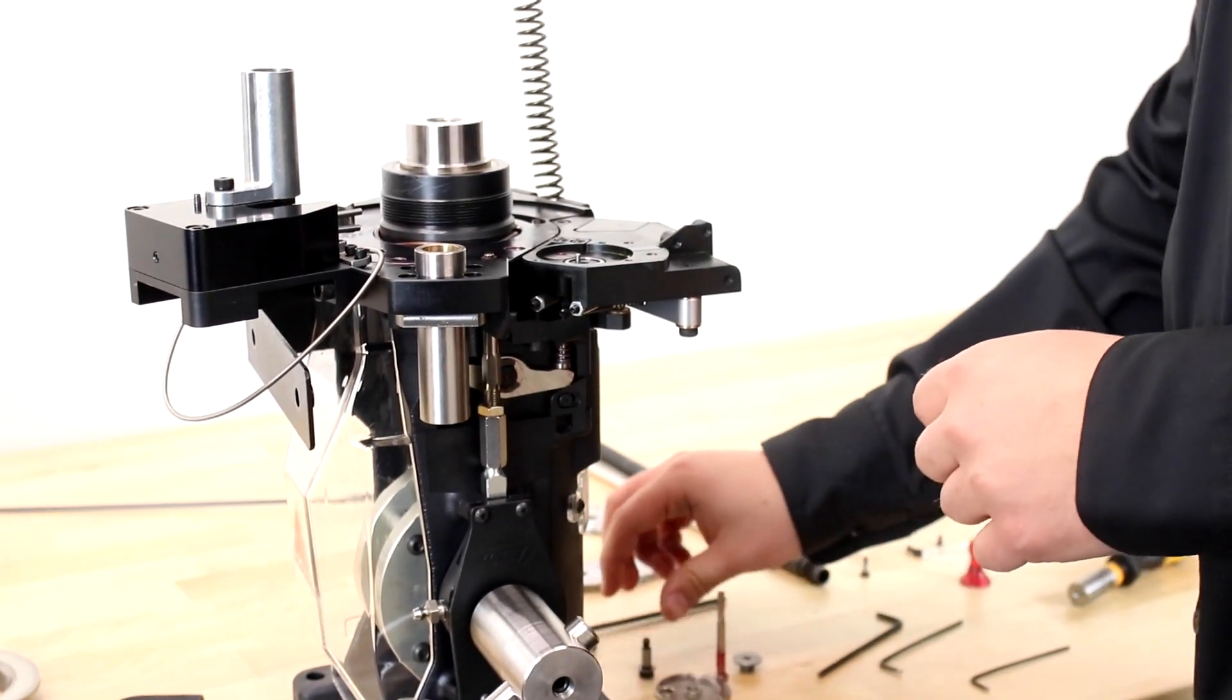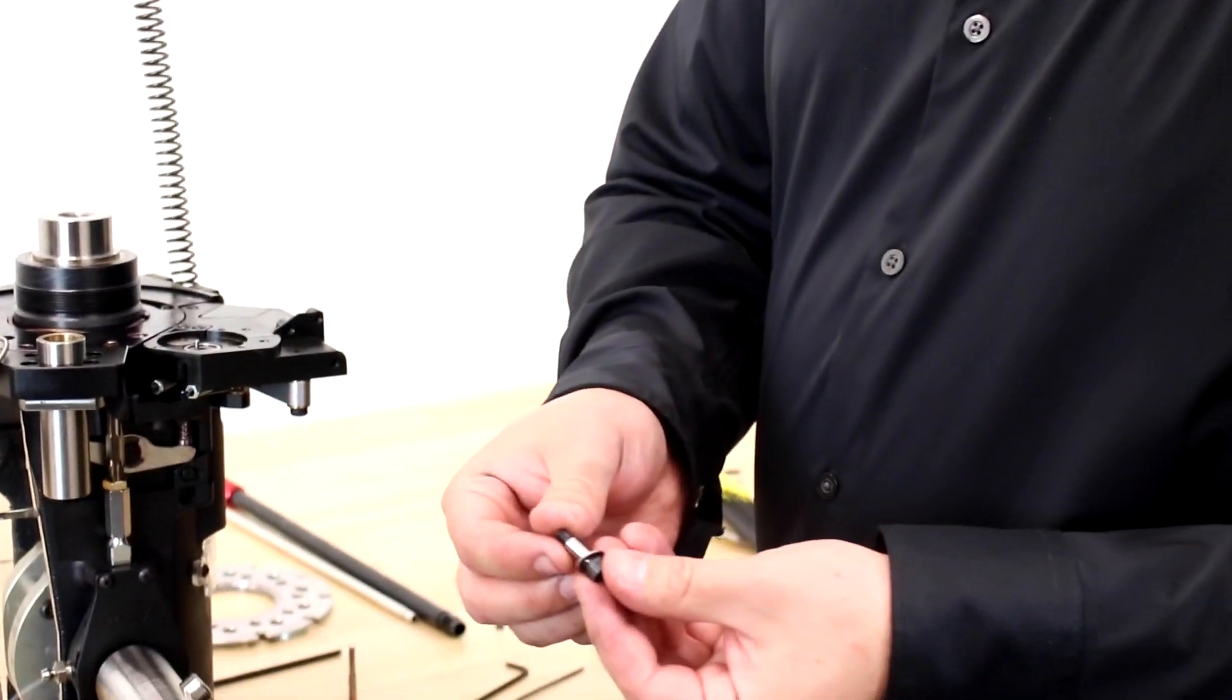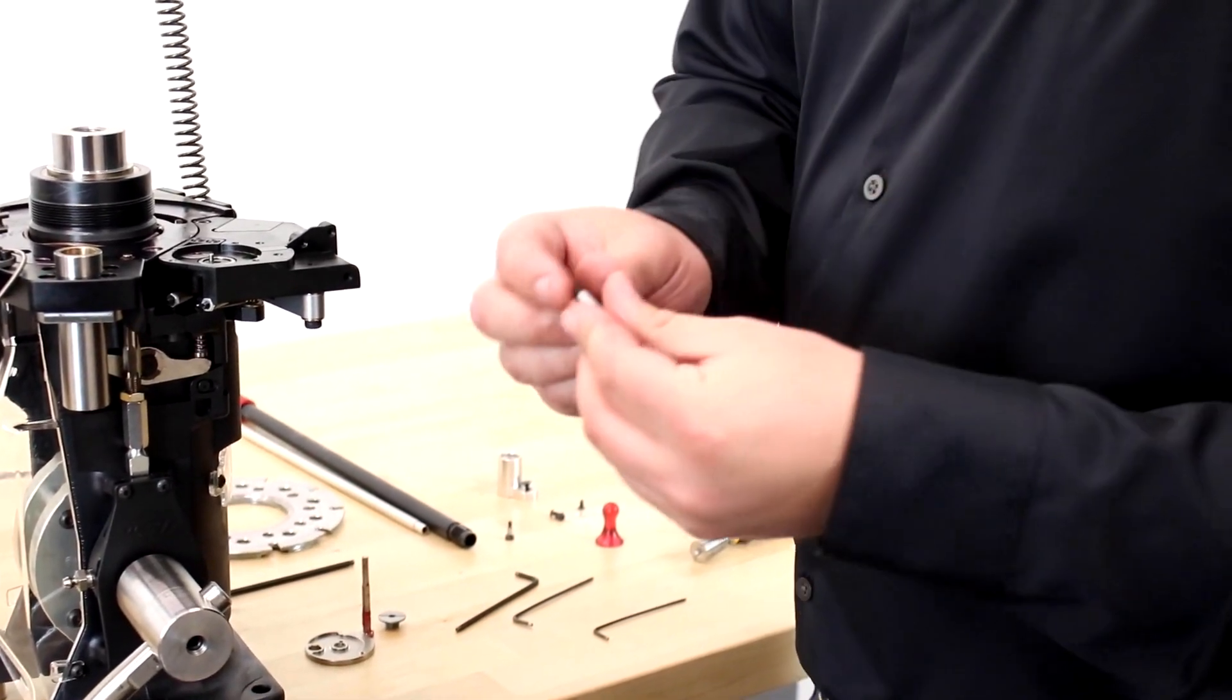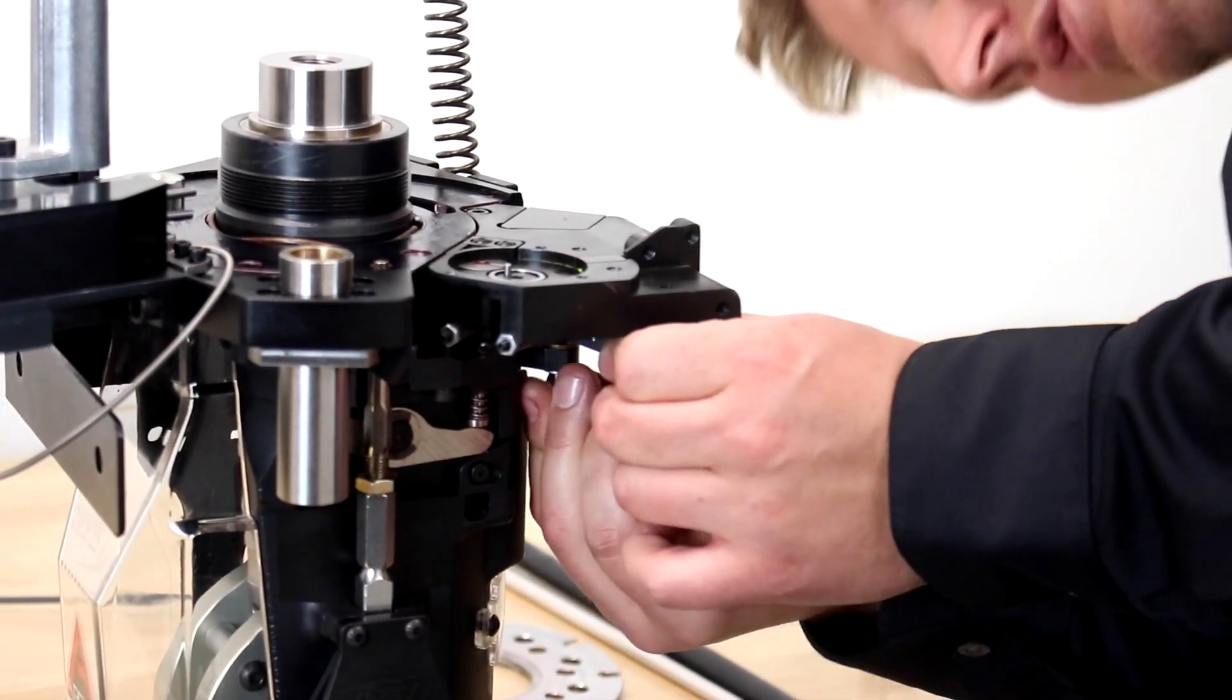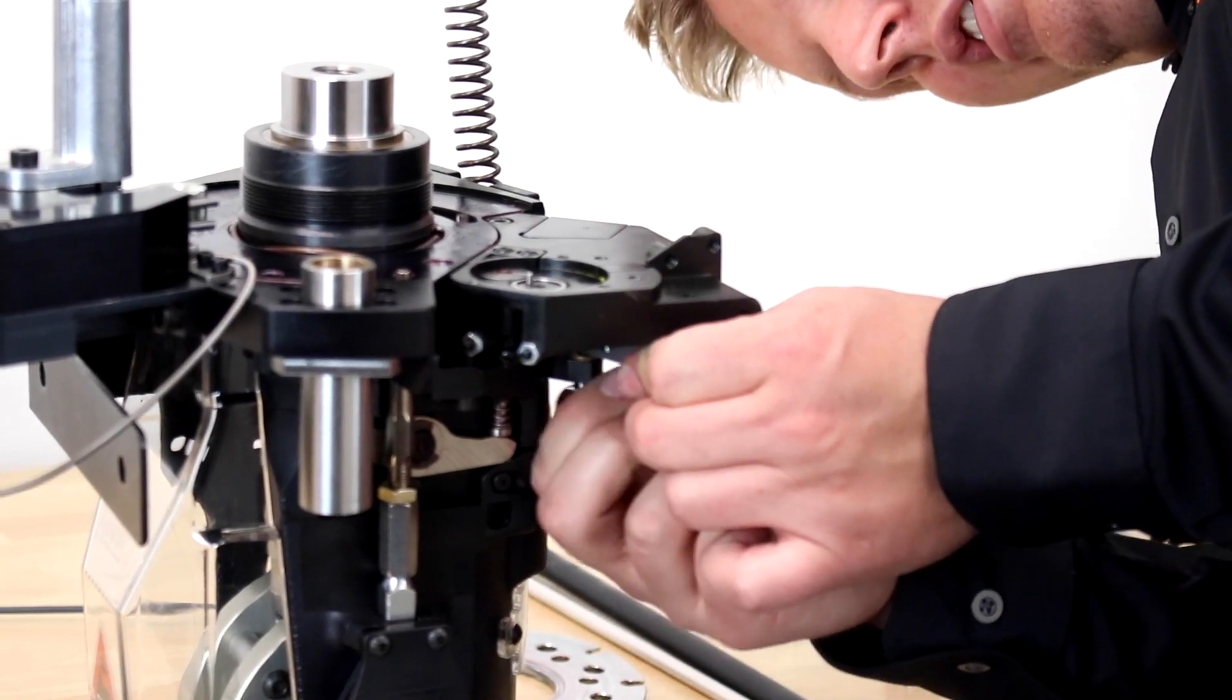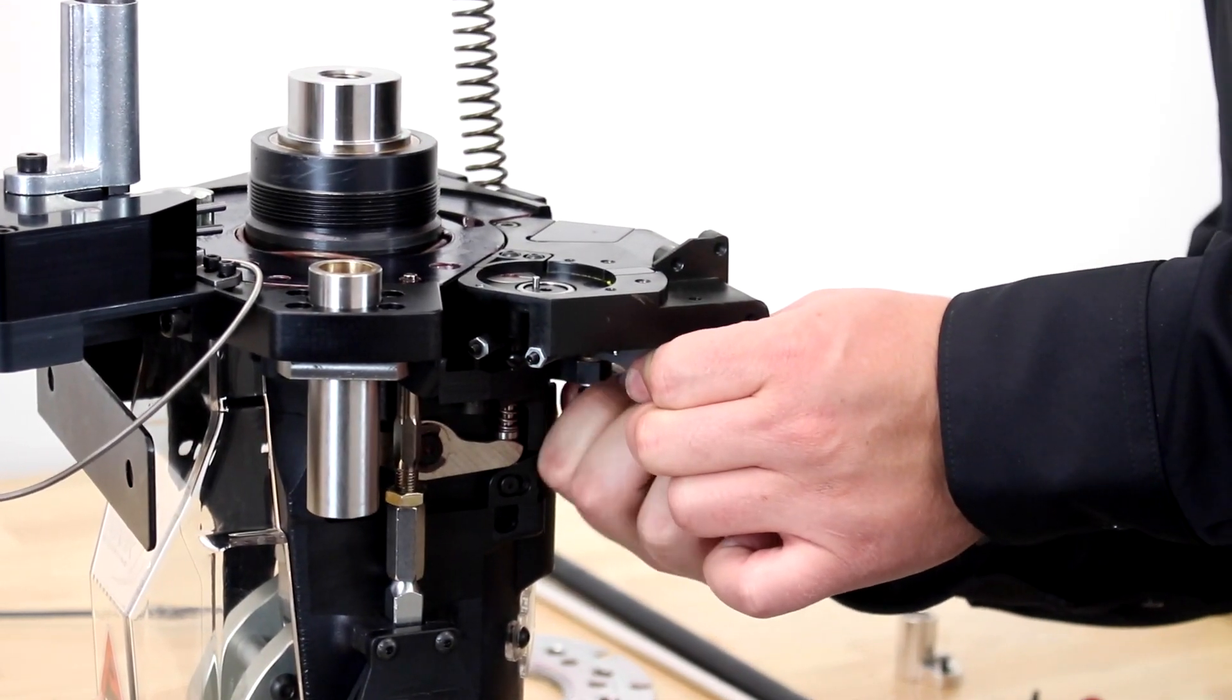So now I'm going to take that shoulder screw that we took off before for the link arm, make sure that the washer is on it, and come over here onto the bottom and simply reinstall it onto the primer link.